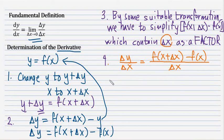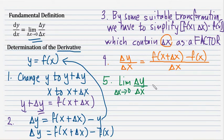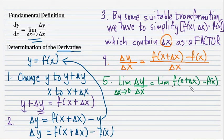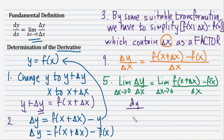Once we have divided both sides by delta x, we move to the fifth step: applying the definition of the derivative by taking the limit of delta y over delta x as delta x approaches 0. After getting that limit, we obtain the derivative of y with respect to x. Let's go ahead and answer some examples to illustrate these steps.